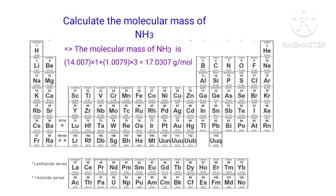So the Molecular Mass of NH3 is 14.007 x 1 plus 1.0079 x 3, which is equal to 17.0307 grams per mole.